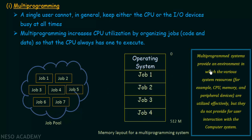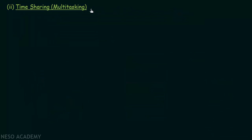A multiprogramming system provides an environment in which various system resources like CPU, memory and peripheral devices are used effectively, but they do not provide for user interaction with the computer system. That brings us to the next topic — multitasking or time sharing systems. Let's see what a time sharing or multitasking system is and how it differs from the multiprogramming system.